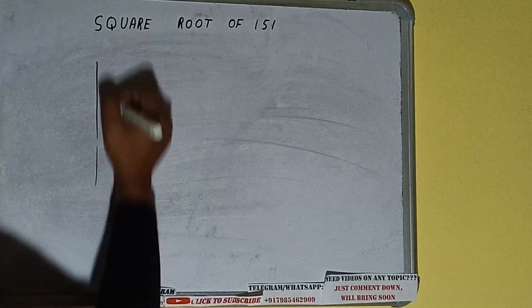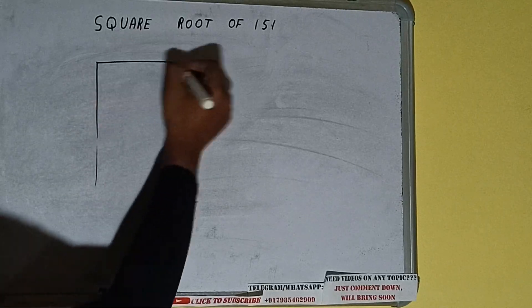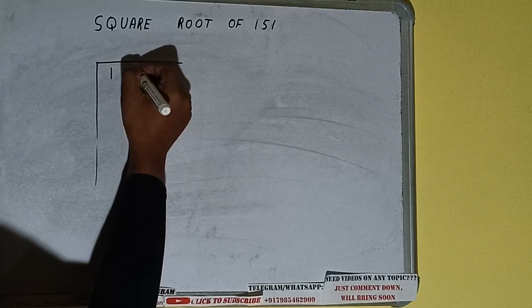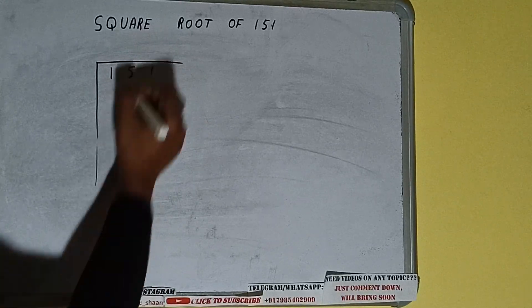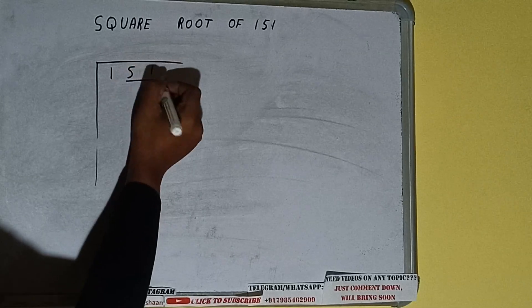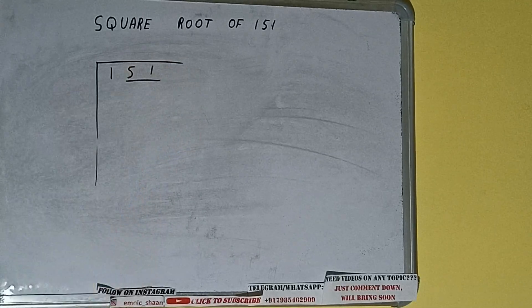Hello friends! In this video I'll be helping you with the square root of the number 151. First of all, we need to write the number, then we need to form pairs from the right-hand side. One pair will be '51' and '1' will be left out.